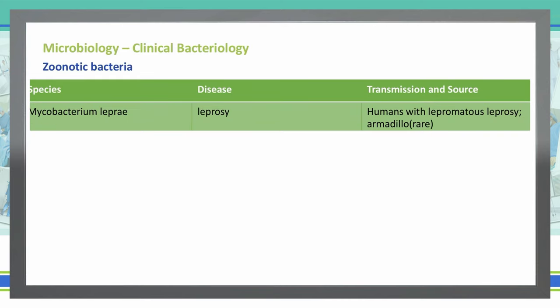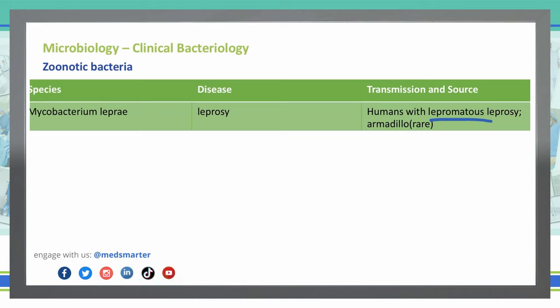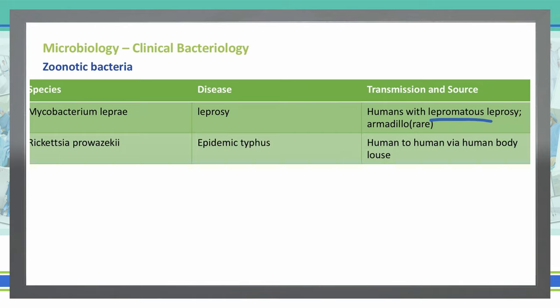Mycobacterium leprae is one of the most commonly discussed organisms in microbiology and causes leprosy. It is transmitted from humans who have lepromatous leprosy only. The other form — tuberculoid leprosy — cannot transmit from human to human because it has a low bacterial load. Rickettsia prowazekii causes epidemic typhus, and it spreads through human-to-human contact with body lice.